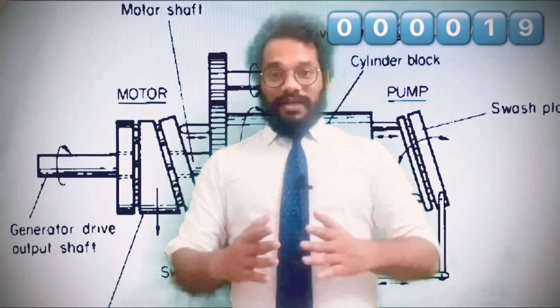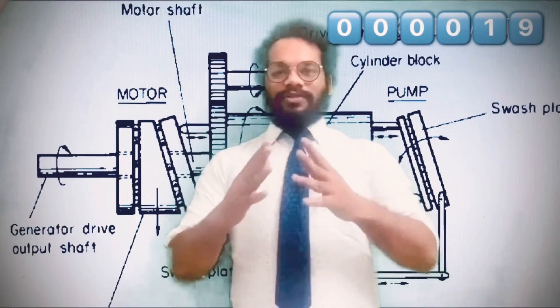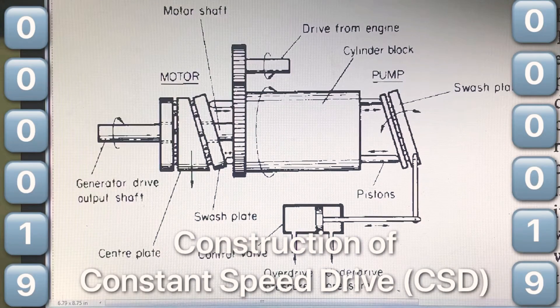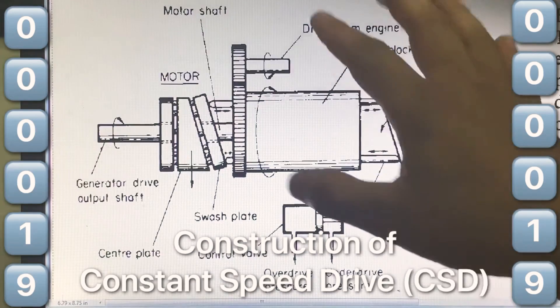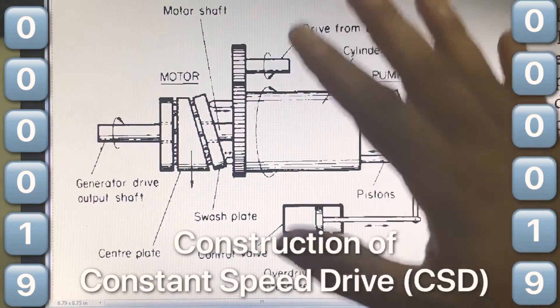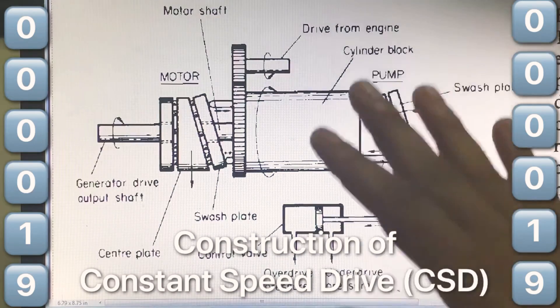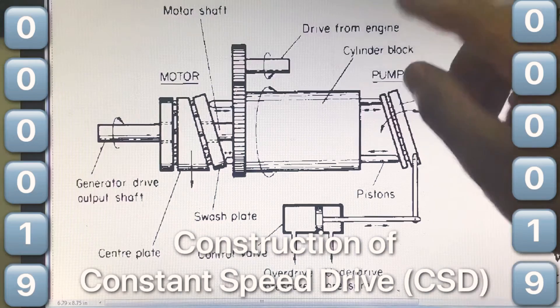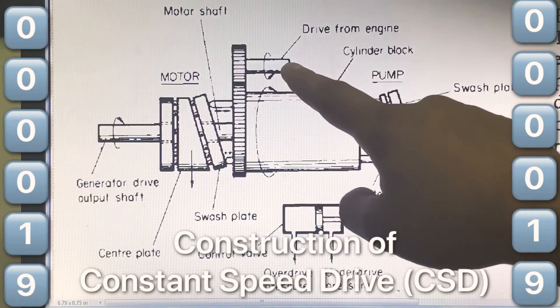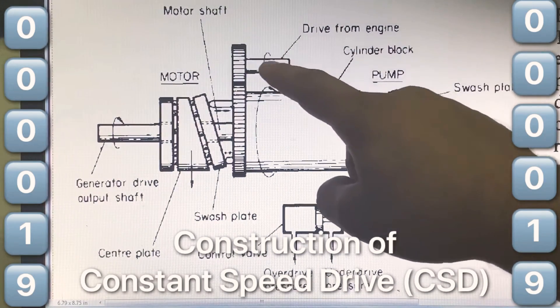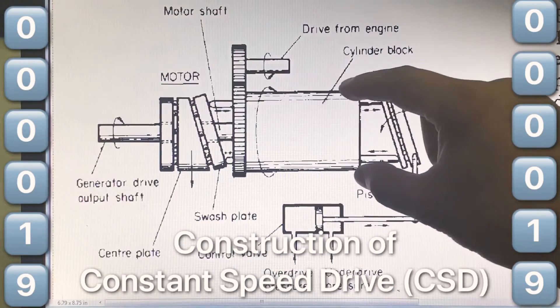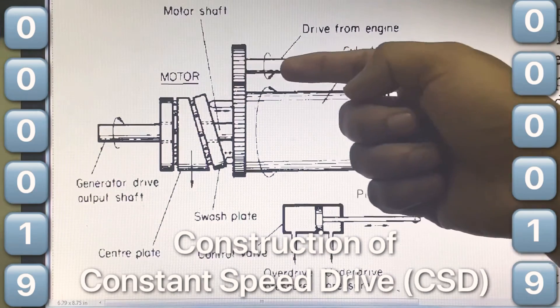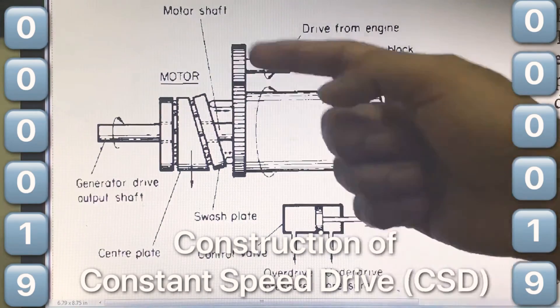So let's discuss about the construction of CSD. As you can see in this picture, we have got the basic format of CSD here. This is the drive from engine and this drive is connected to this block. This is the cylinder block which rotates. So this drive when given from the engine rotates this cylinder block.